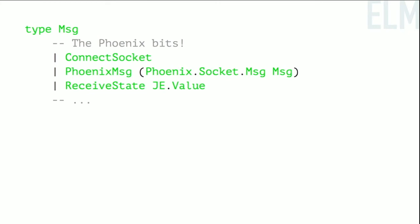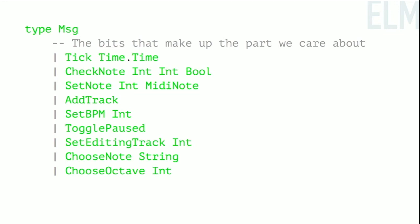All this stuff lets us make noise in the browser. We want to talk to Phoenix. We have a message that tells us to connect the socket, managed by a library I use. Then receive state says 'here's your new model that the server gave us' — it's a JSON encoded value we decode into our actual types on our side. In Phoenix channels there's also something called presence so you can know who's on the same channel as you. I wrote support for it but don't use it here yet.